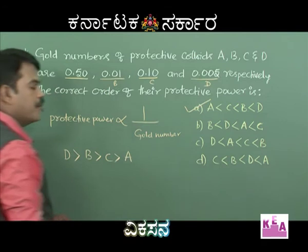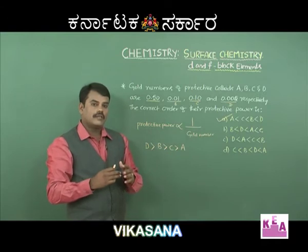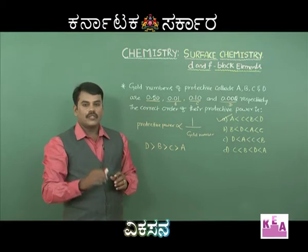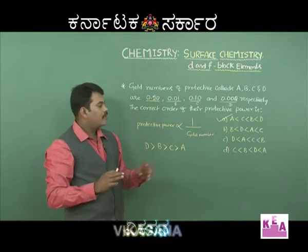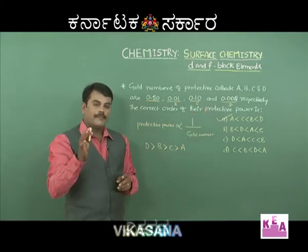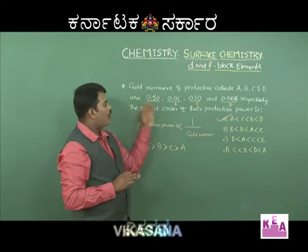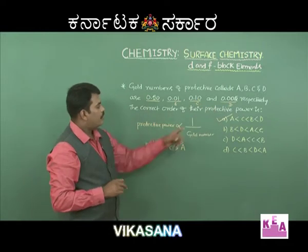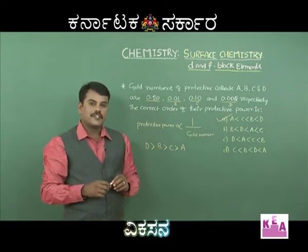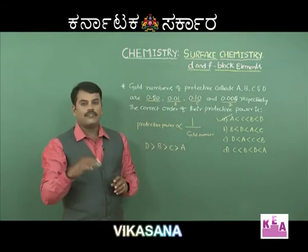Option A should be the correct option. Remember that taking the reciprocal of the gold number makes comparison easier. Gold number decides the ability of a lyophilic sol in protecting a lyophobic colloid; the best lyophilic sol to choose is the one with the lowest gold number. Therefore, D is the best option for protecting the lyophobic sol from coagulation.